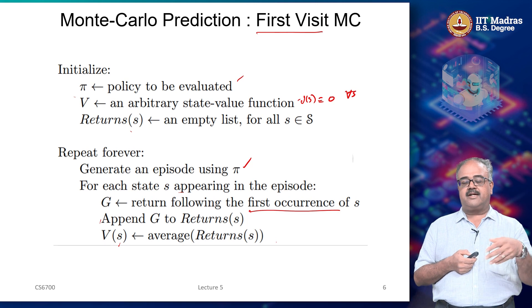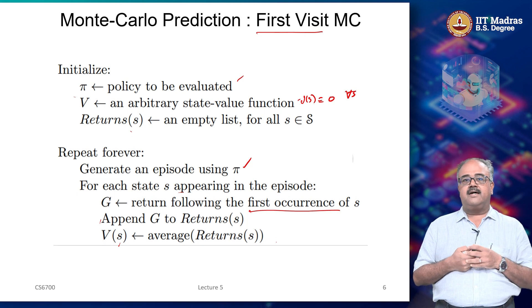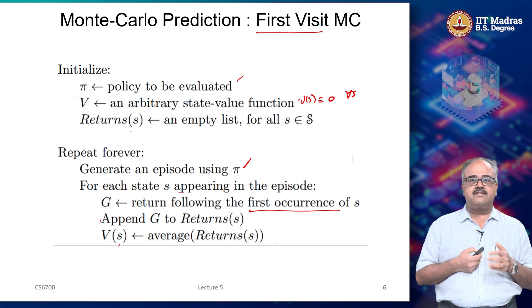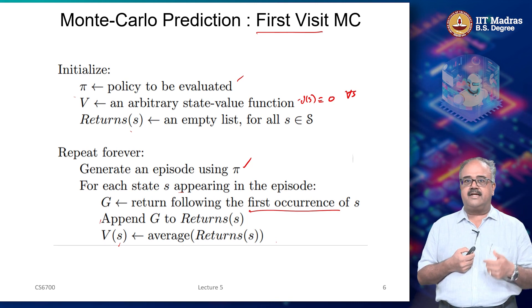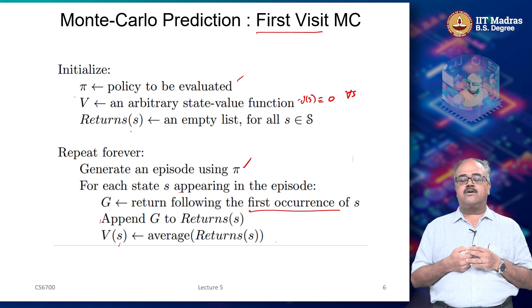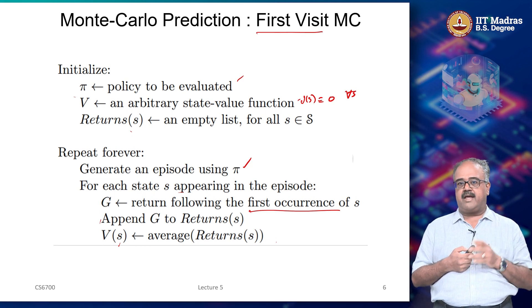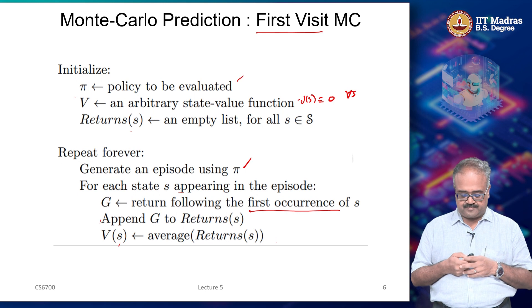We just took a policy — whatever is the current policy that we are estimating the value function for — generated trajectories according to that, then took the return as a sample and averaged the returns.